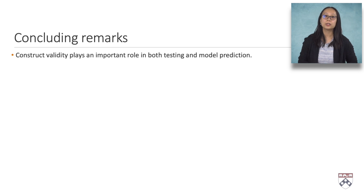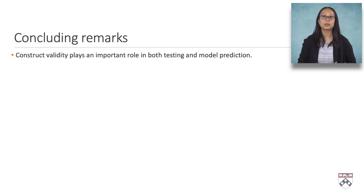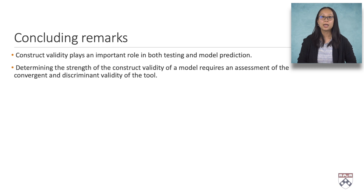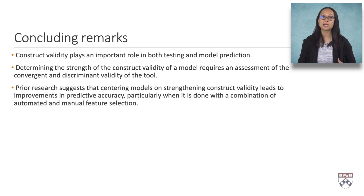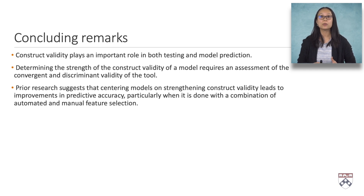To wrap up with some concluding remarks: construct validity plays an important role in both testing and model prediction, because the ultimate goal is to ensure that tools — whether instruments, models, or exams — provide information about the topic of interest. Determining the strength of construct validity requires an assessment of both convergent and discriminant validity, and remember that both are necessary to establish strong construct validity. Moreover, prior research suggests that centering models on strengthening construct validity leads to improvements in predictive accuracy.